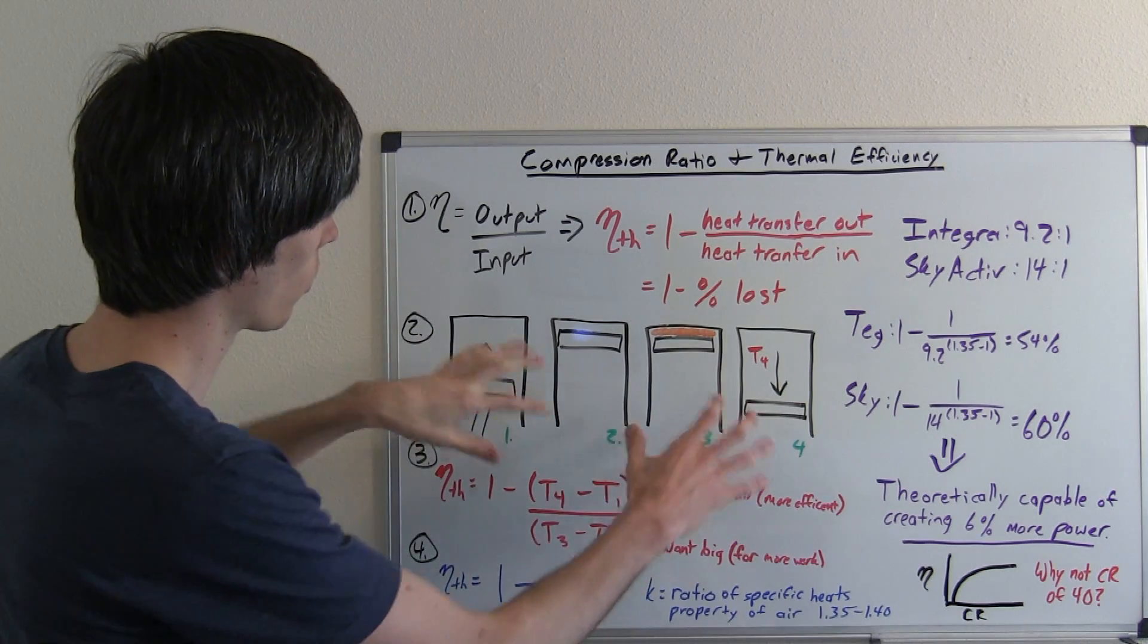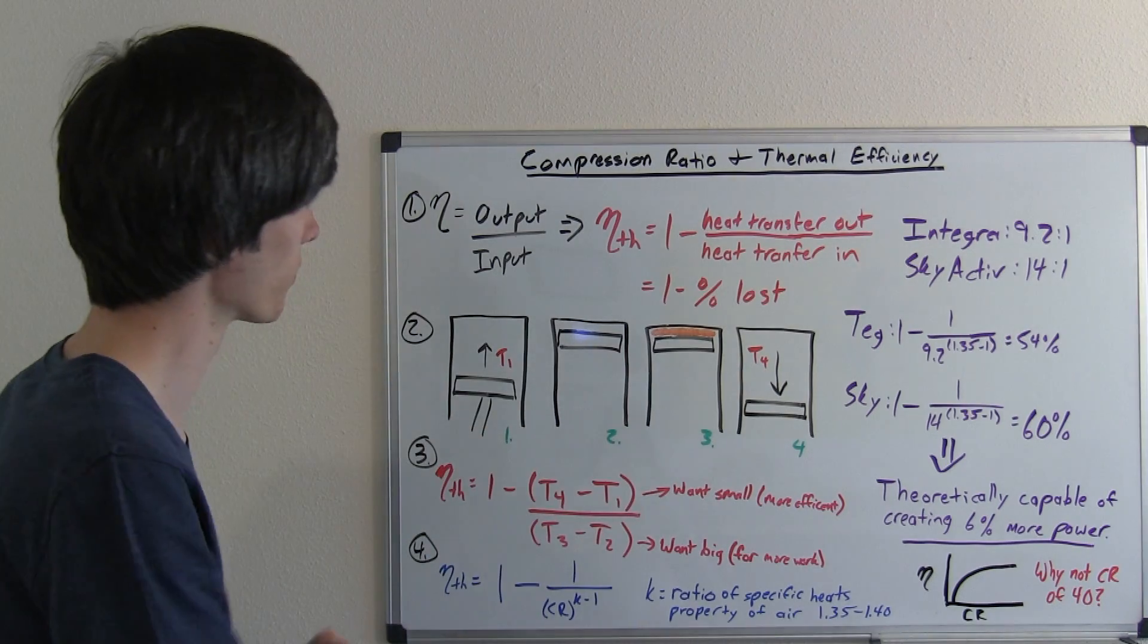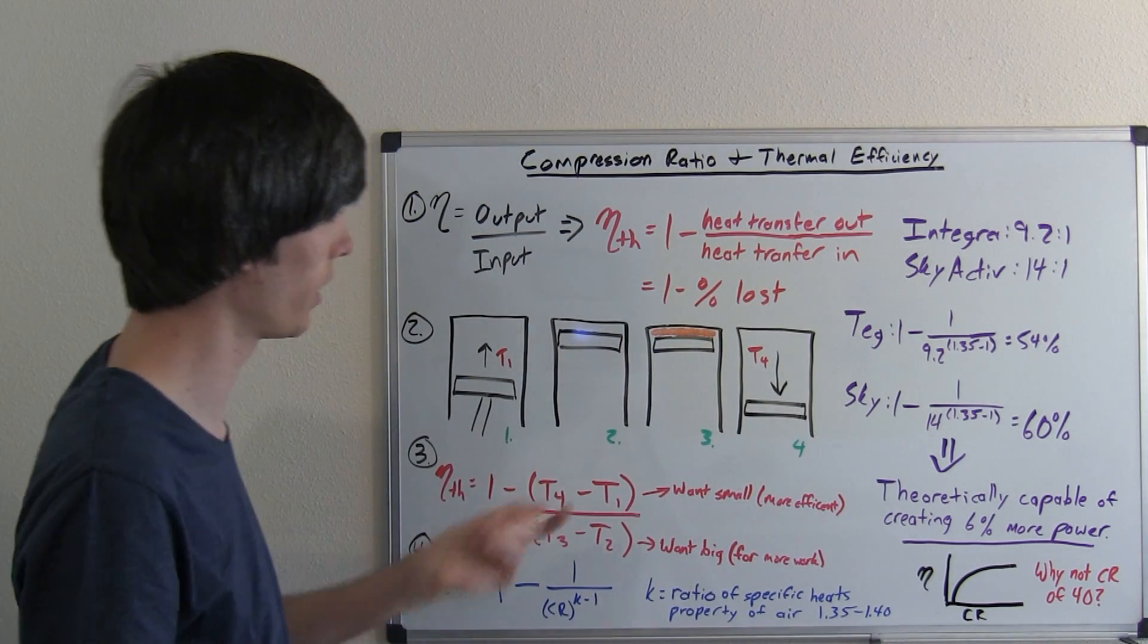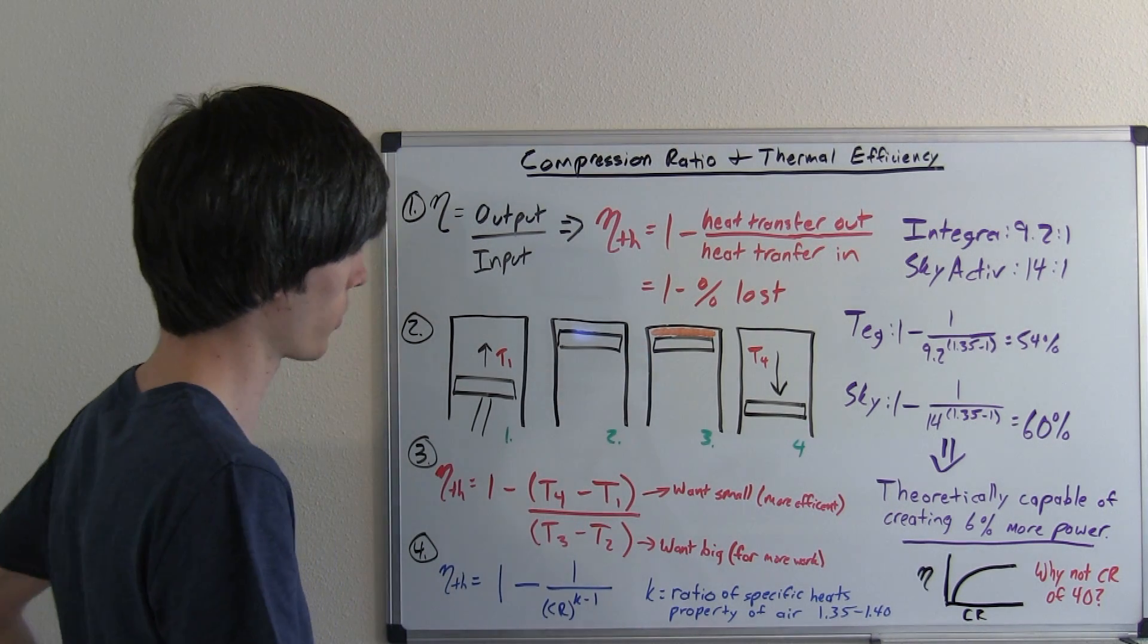So with these four phases here we can kind of describe what's going on with this equation. So thermal efficiency, one minus heat transfer out divided by heat transfer in. Now heat transfer out and heat transfer in can be represented by a difference in temperatures.